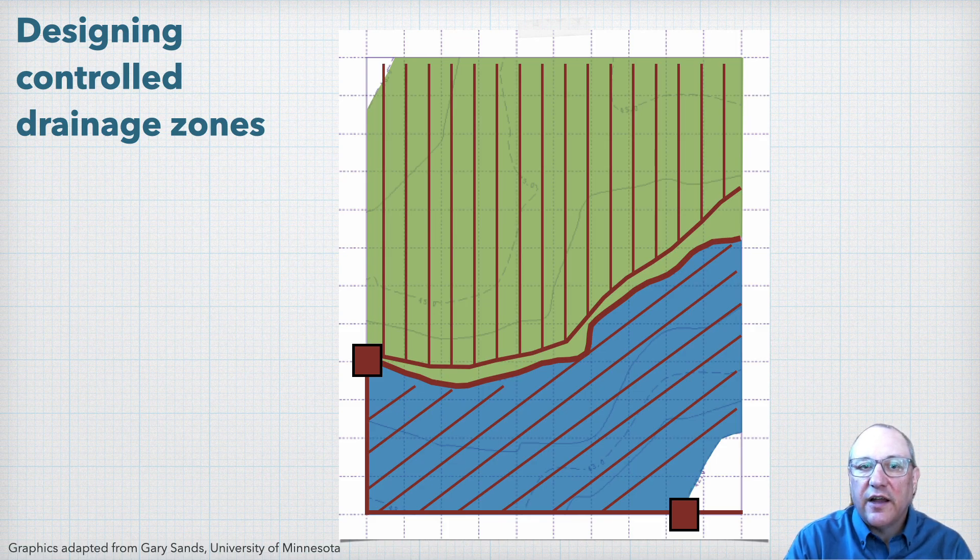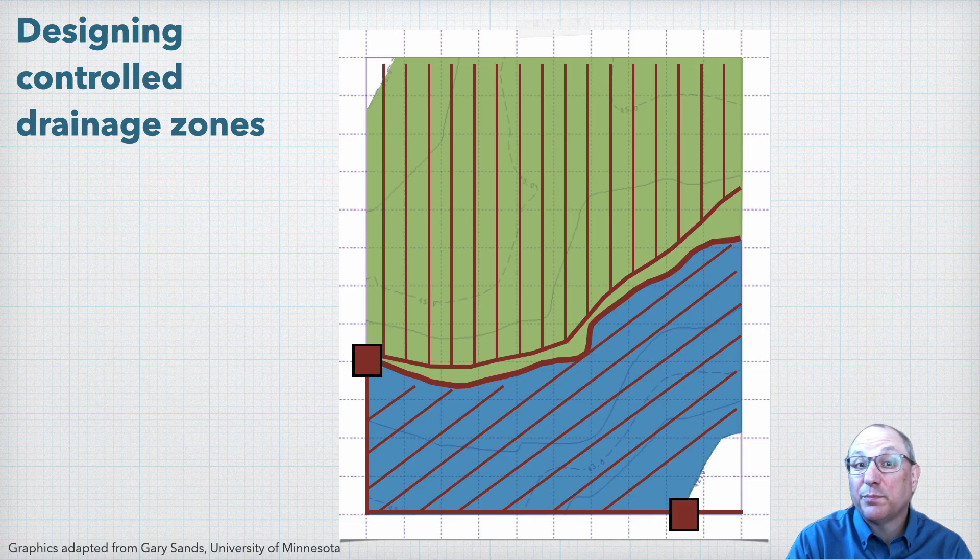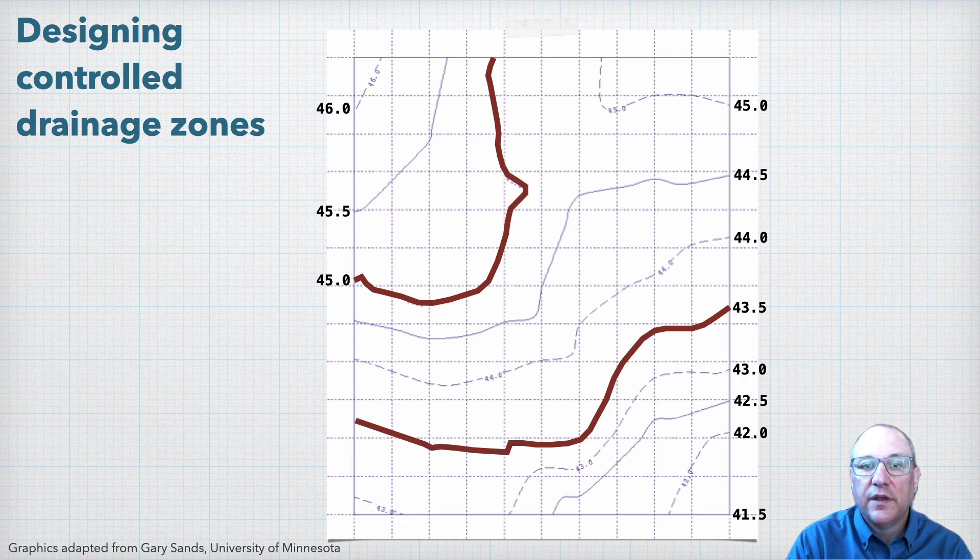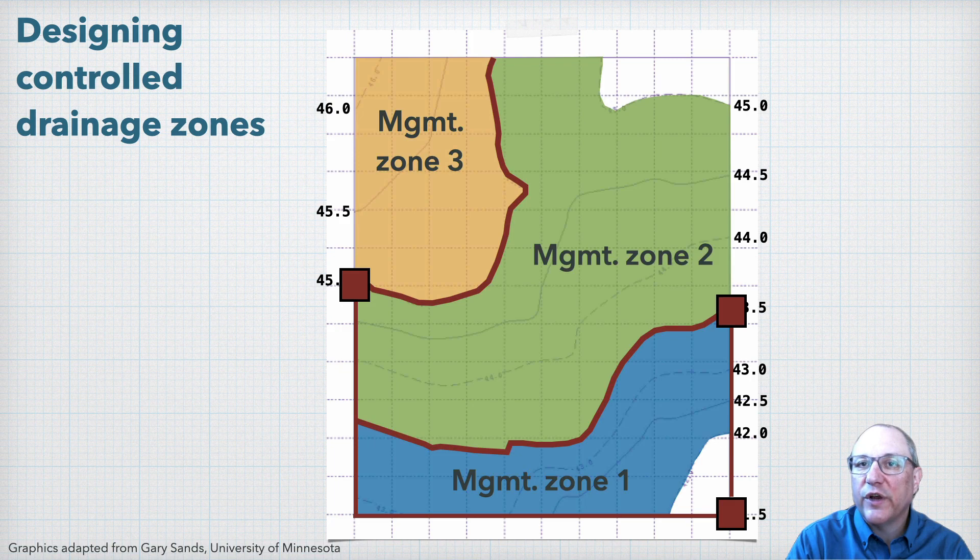So we've looked at a two-zone design, but what if we wanted more control of the system, and we're willing to spend a little more for that option? In that case we could look at a three-zone design, where now we have a 1.5-foot zone elevation interval. Then our management zones could look like this, with our three control structures.